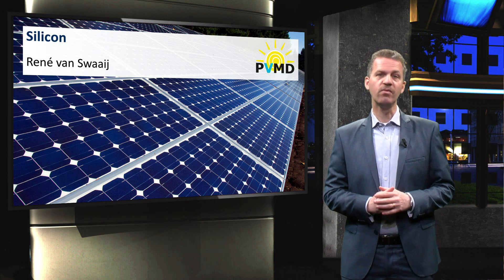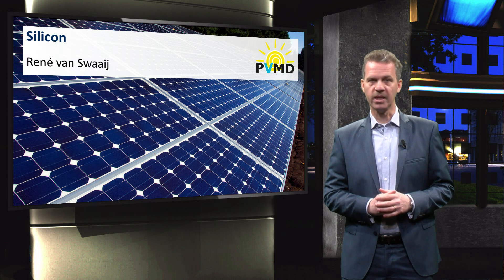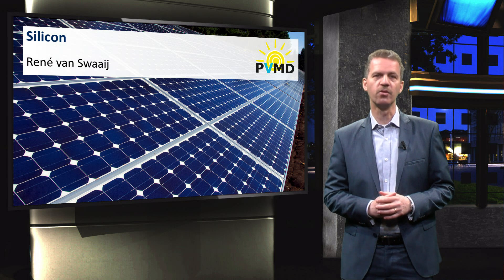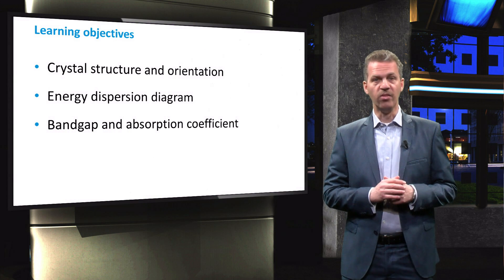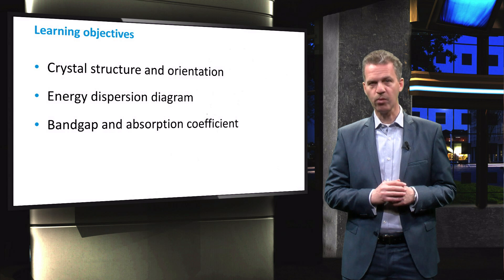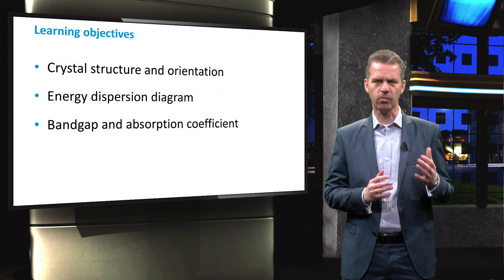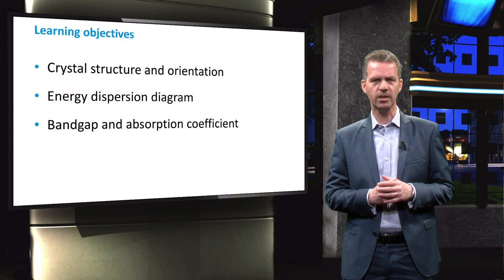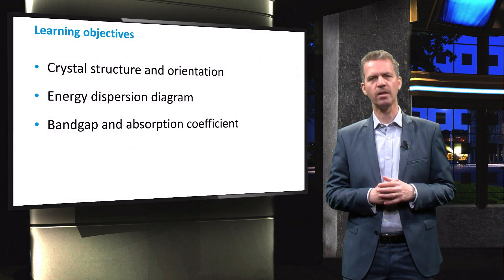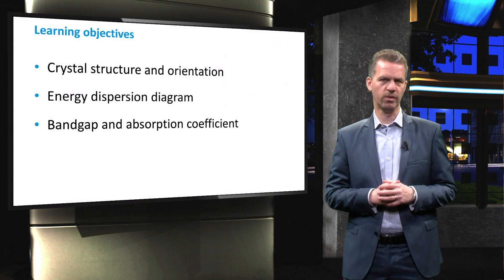In the previous video we briefly discussed the advantages and limitations of crystalline silicon as a solar cell material. In this video we will discuss the basic properties of this material such as the crystal structure and orientation, the energy dispersion diagram and the absorption coefficient.